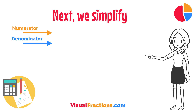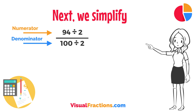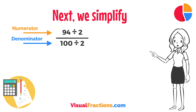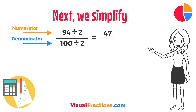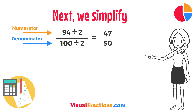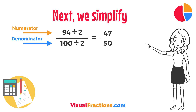Next, we simplify. Both the numerator and the denominator in 94 one-hundredths are divisible by 2, the greatest common divisor. Divide 94 by 2 to get 47, and divide 100 by 2 to get 50. So, 94 one-hundredths simplifies neatly to 47 fiftieths.